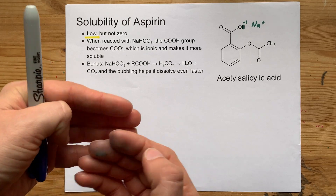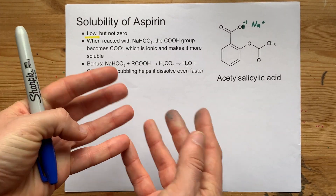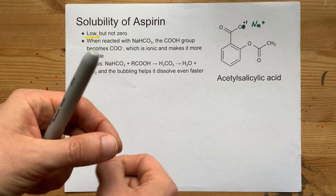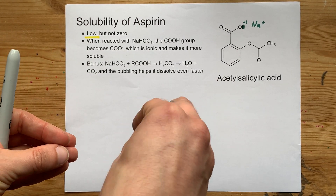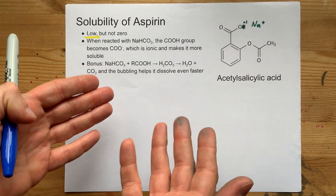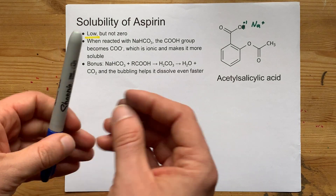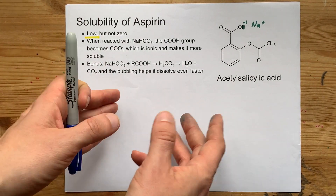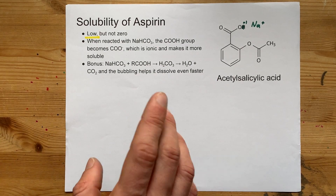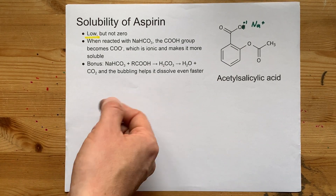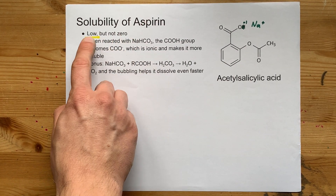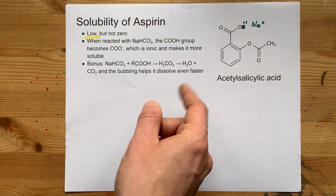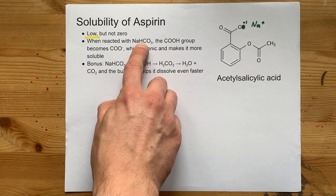One way to increase the rate of a reaction or the rate of dissolving is to agitate, swirl, or stir a mixture. The bubbling here will help move the molecules around a little bit more, and that will make it dissolve even faster. The official answer is that aspirin has low solubility, but you can make it dissolve in water by reacting it with a base.